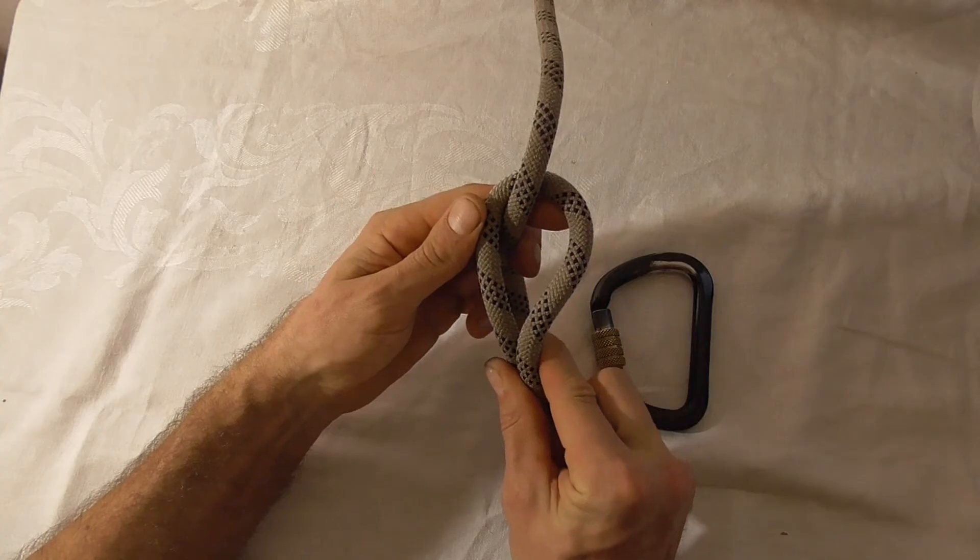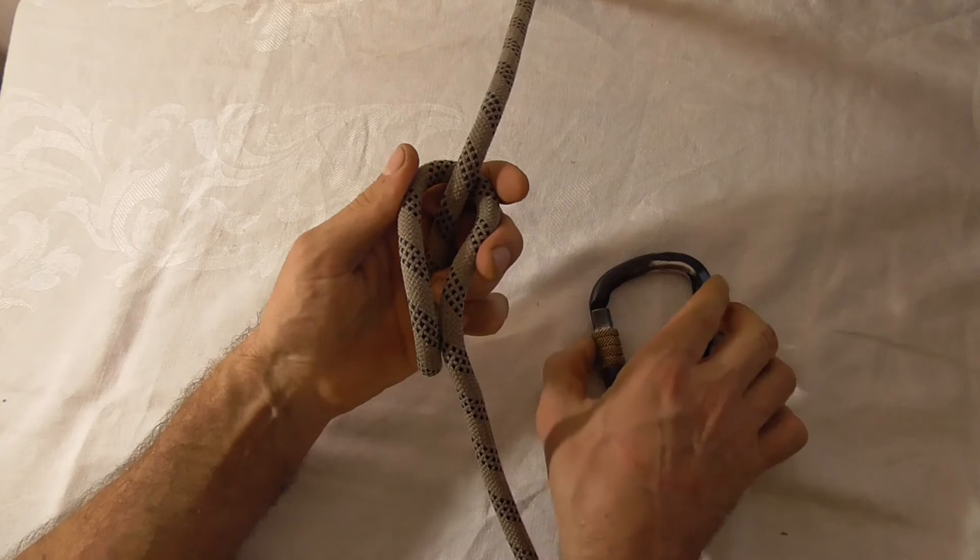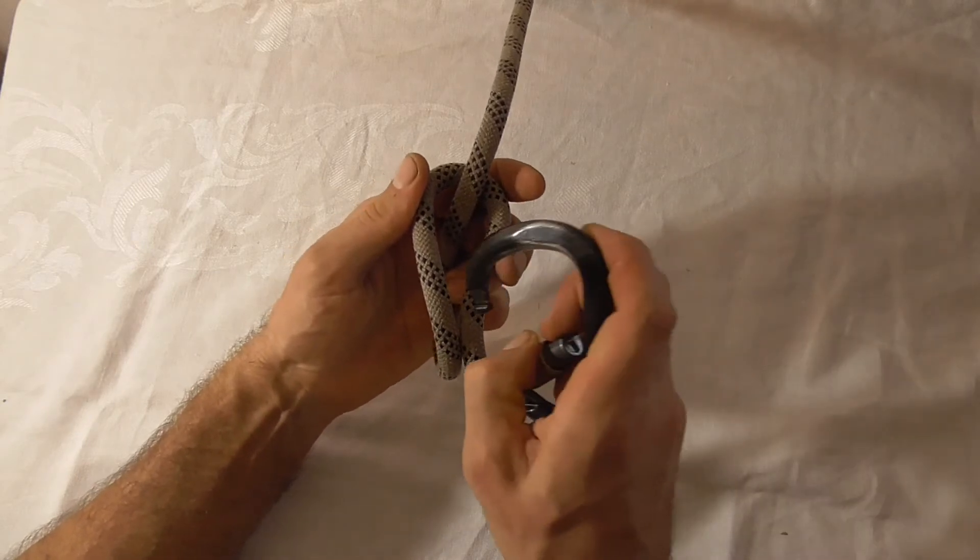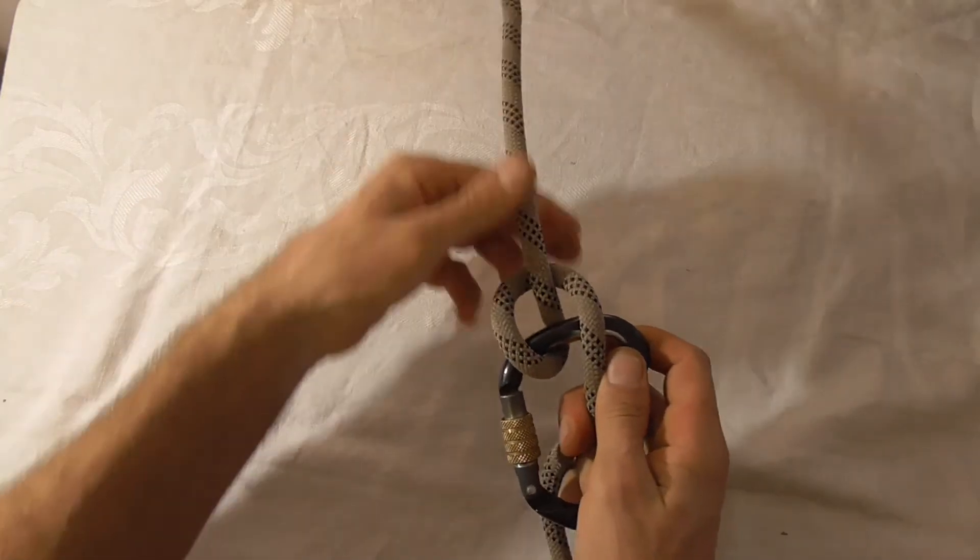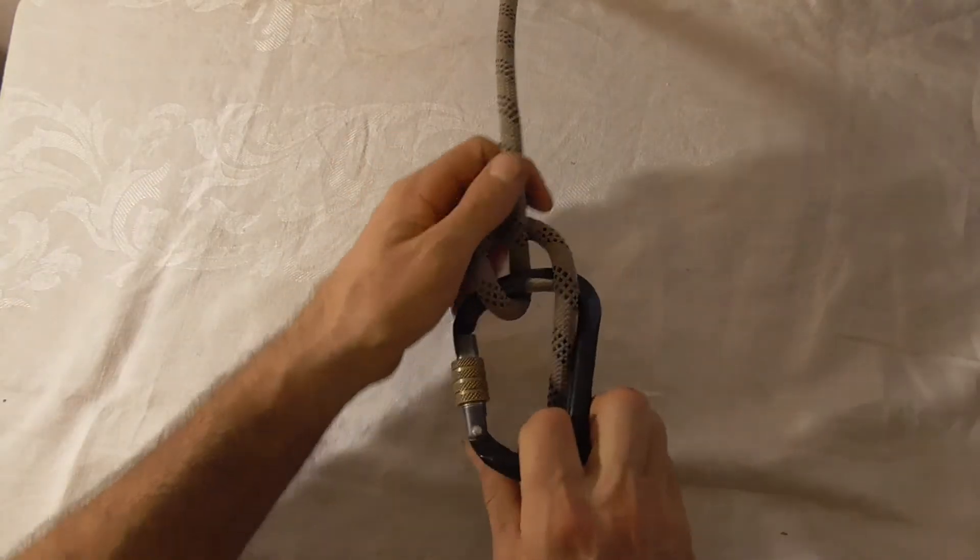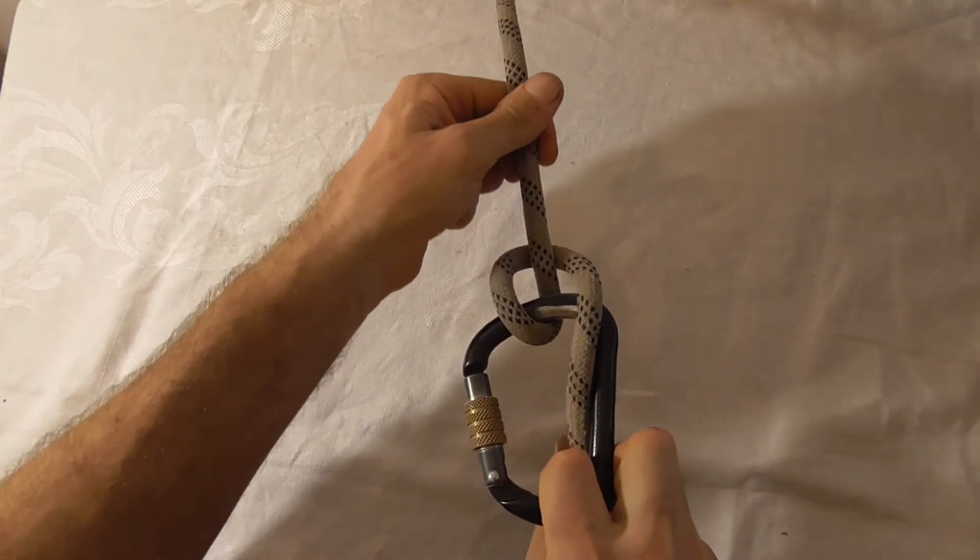And you'll notice I have a horseshoe shape here, and then I just want to grab my carabiner and clip into both these strands. Tighten it up and there is your friction knot right there.